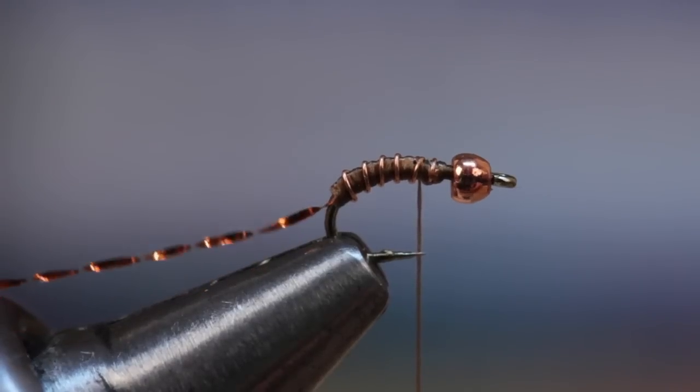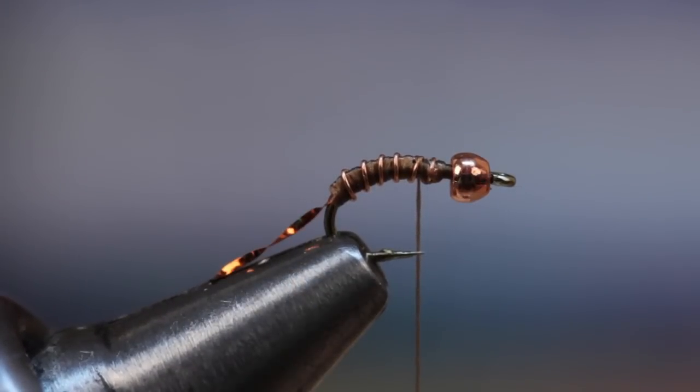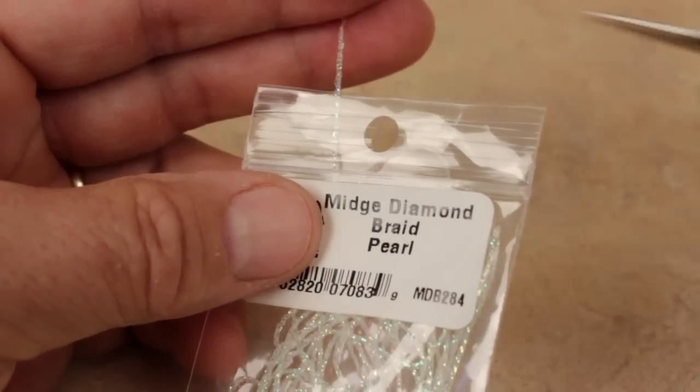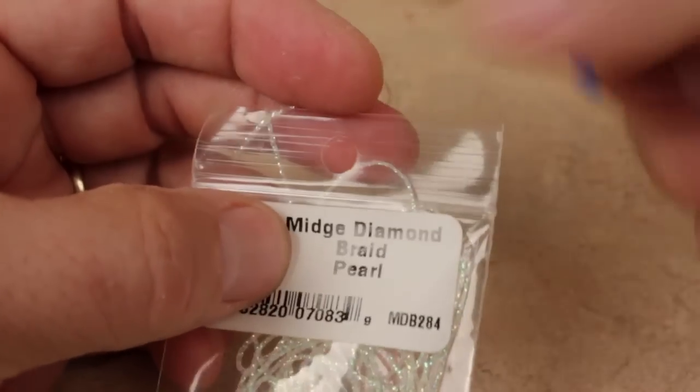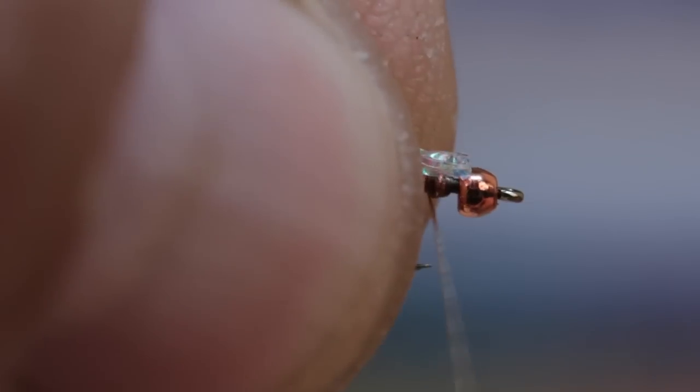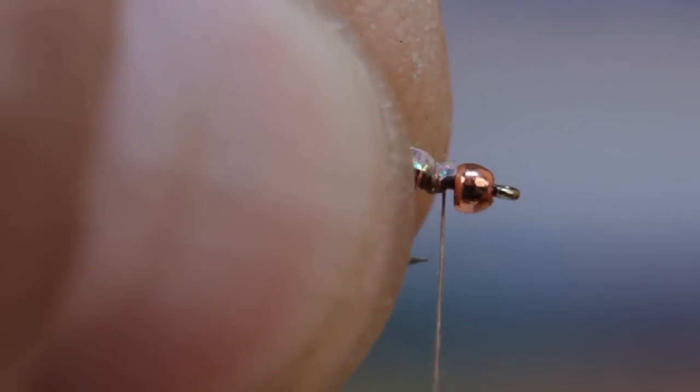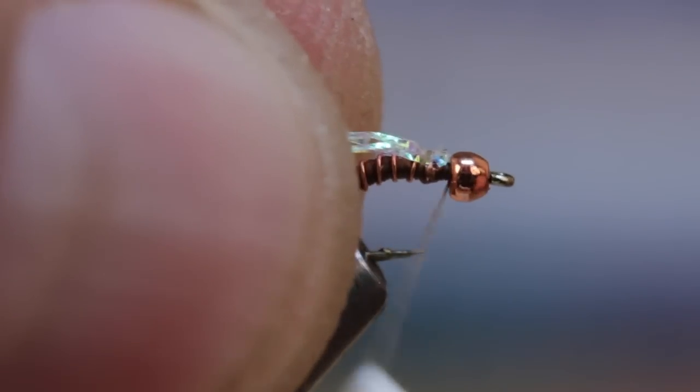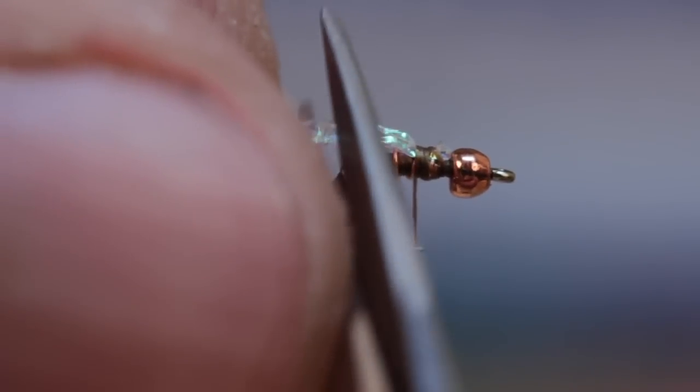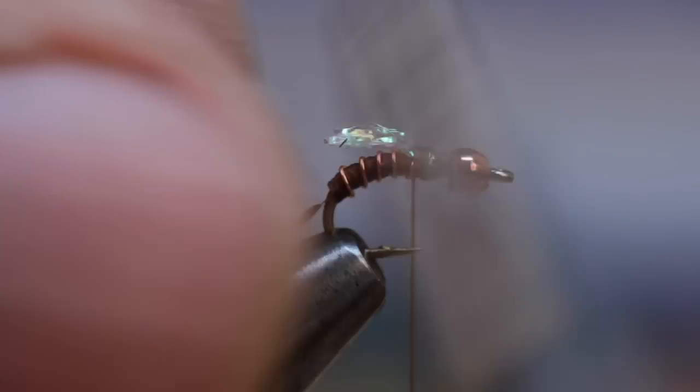Now is a good time to snip the crystal flash off to form a trailing shuck about a hook shank in length. For a wing bud, snip off a short length of pearl midge diamond braid. Again, this will make numerous flies. Secure one end of the braid to the top of the hook shank and take wraps rearward to just behind the hook point. Snip the braid off to form a wing bud about a half a hook shank in length.